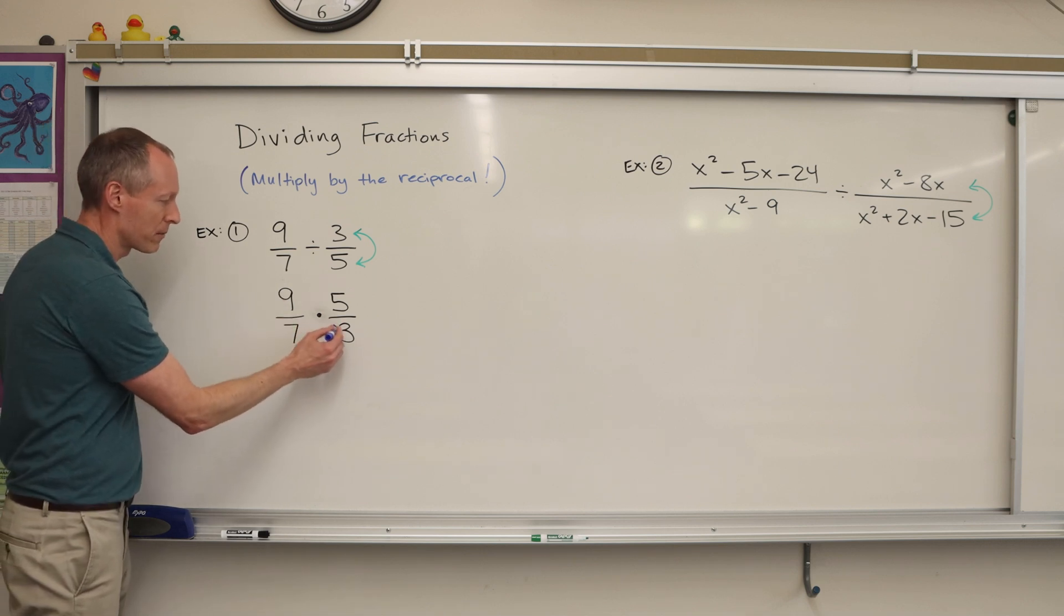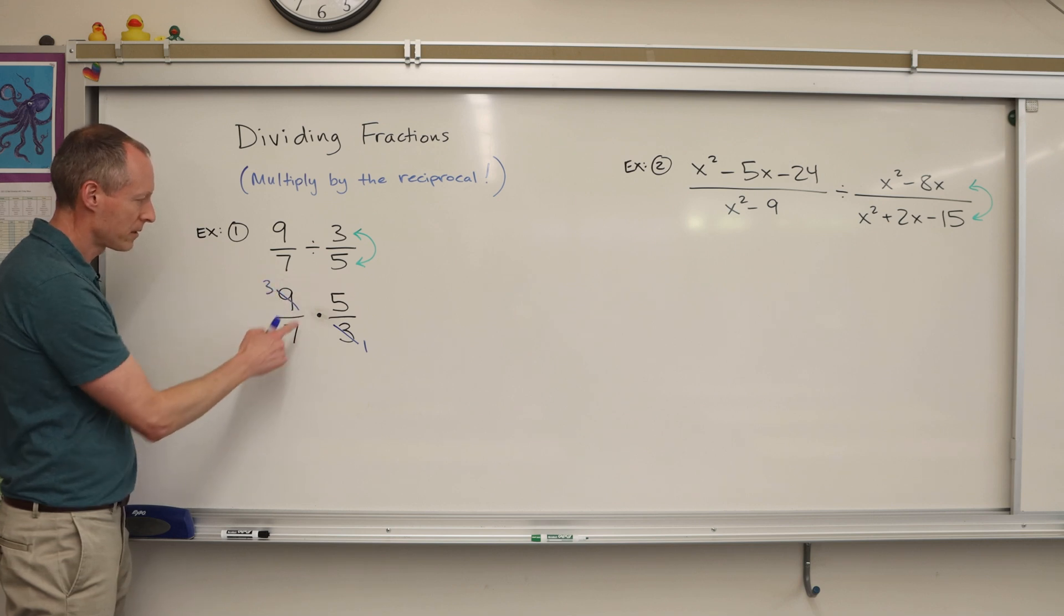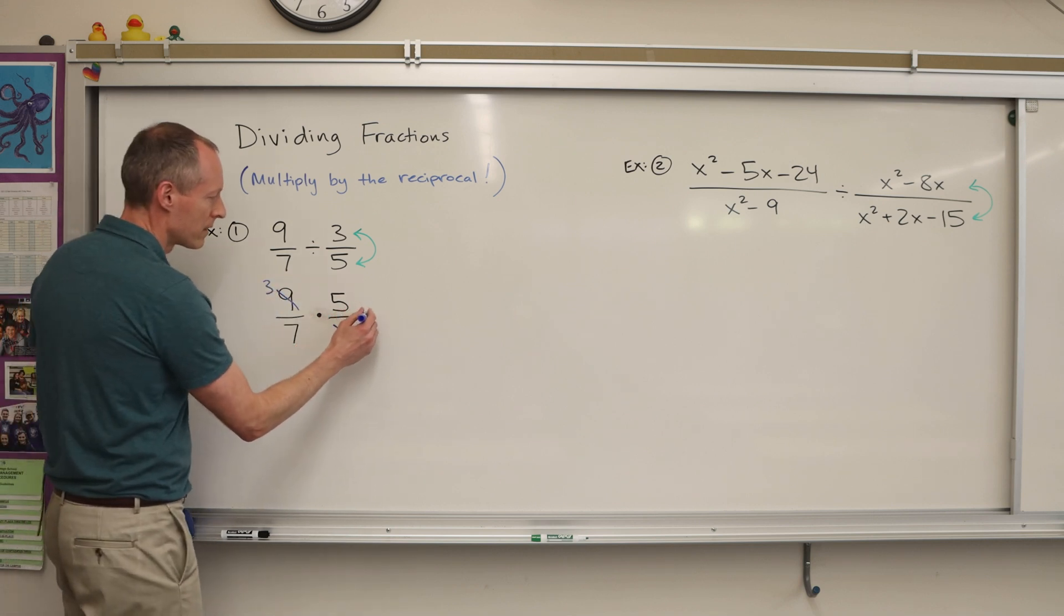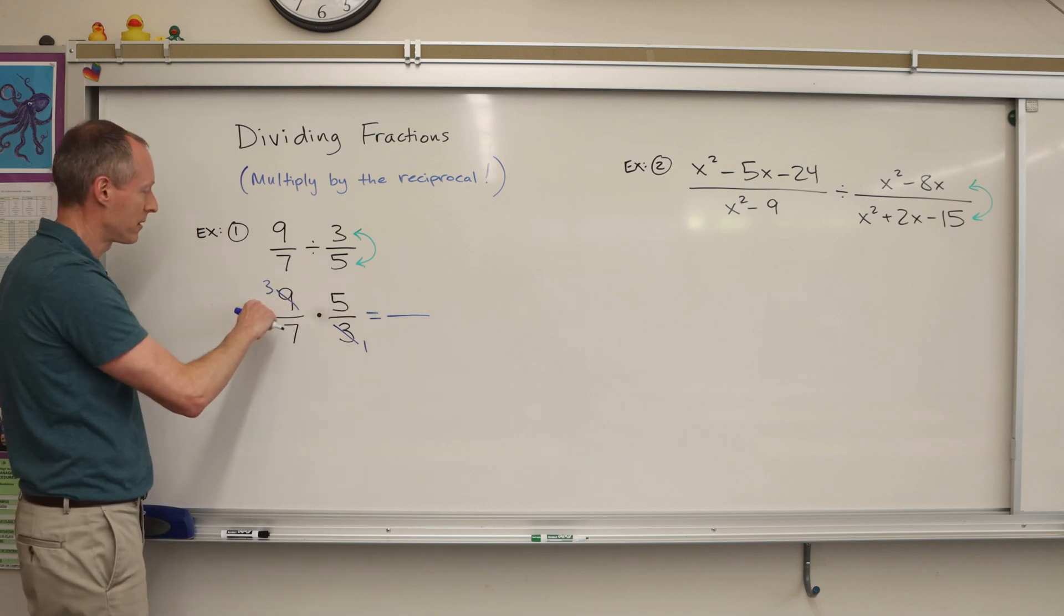So I see nine and three. Three goes in there once. Three goes in there three times. Five and seven can't cross-cancel. So our final answer, now we can multiply straight across the numerators.